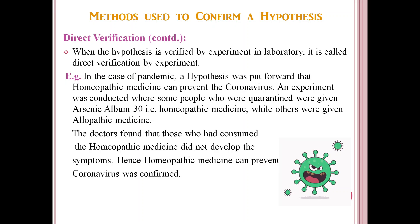An experiment was conducted. Some people who were quarantined were given arsenic album 30, that is homeopathic medicine, while the others were given allopathic medicine. Then the people were observed whether they had developed Covid-19.